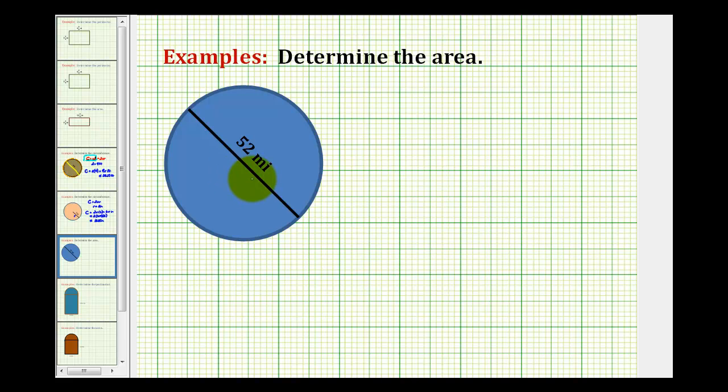We want to determine the area of the given circle. Since the length of the diameter is given in miles, the area represents a number of square miles that would fit inside the circle.